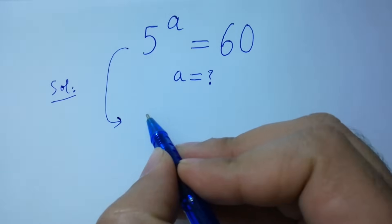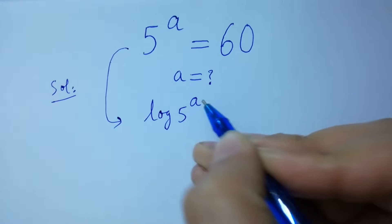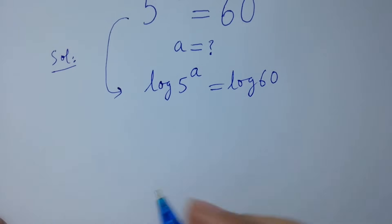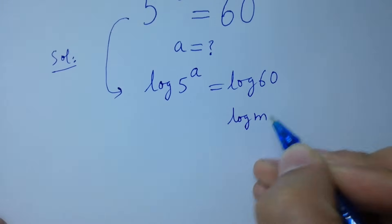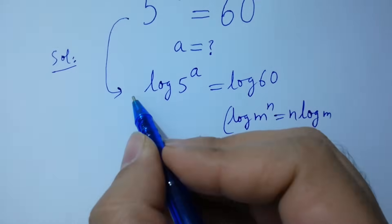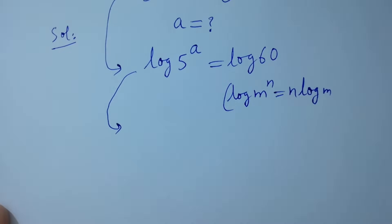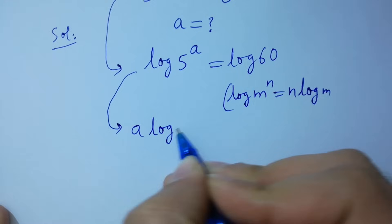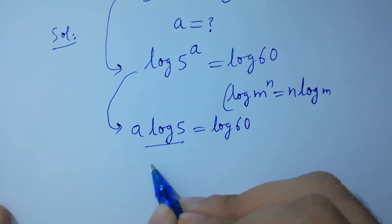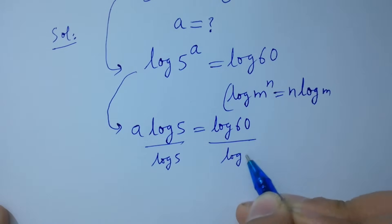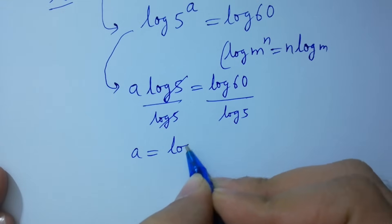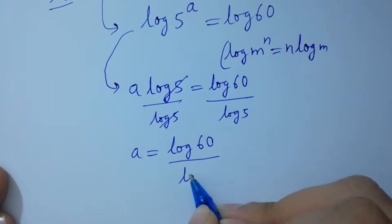Take log on both sides. As we know, log m to the power n equals n log m. We have a log 5 equal to log 60. Divide by log 5 on both sides — log 5 and log 5 cancel — giving a equal to log 60 over log 5.